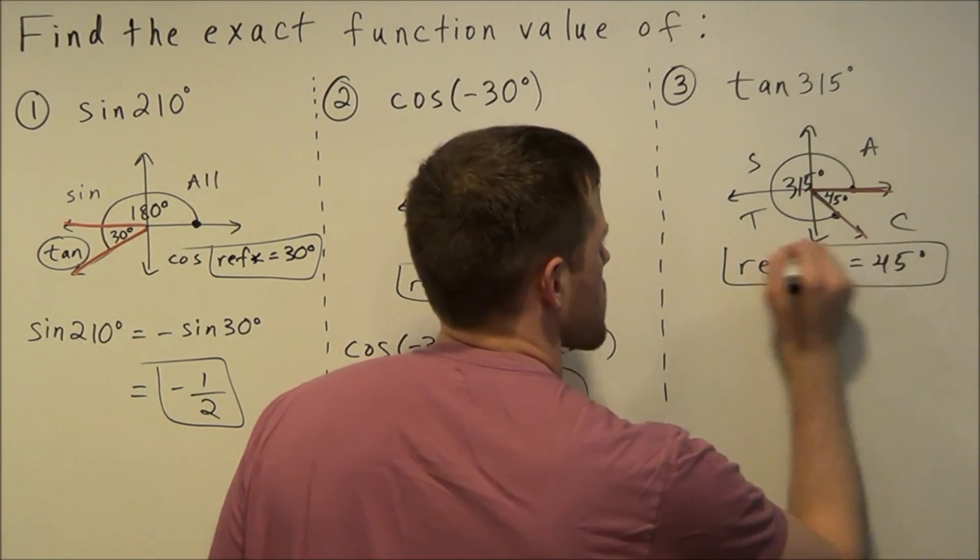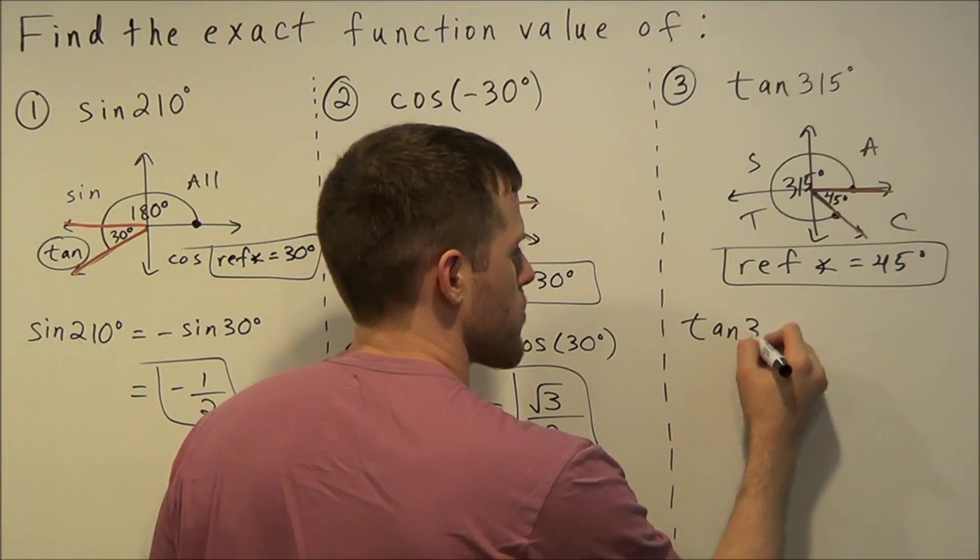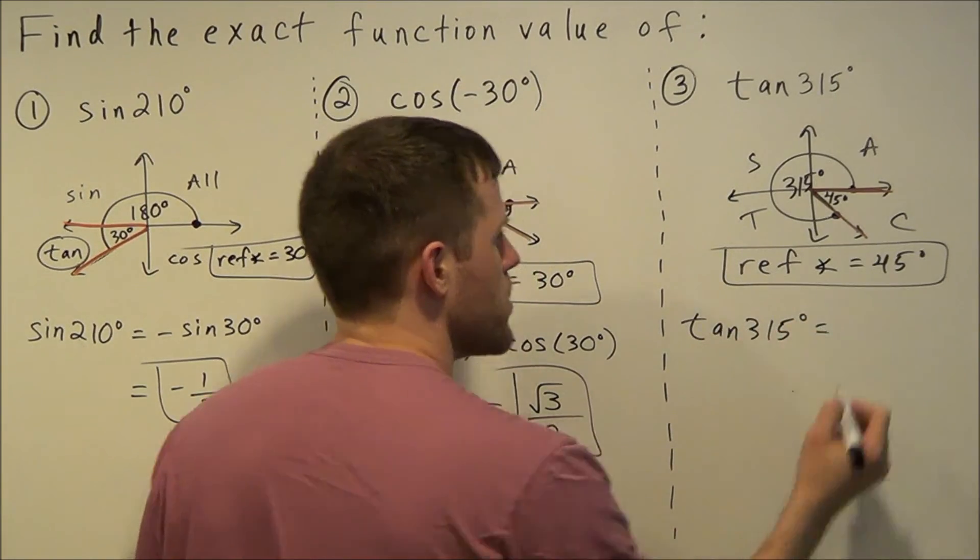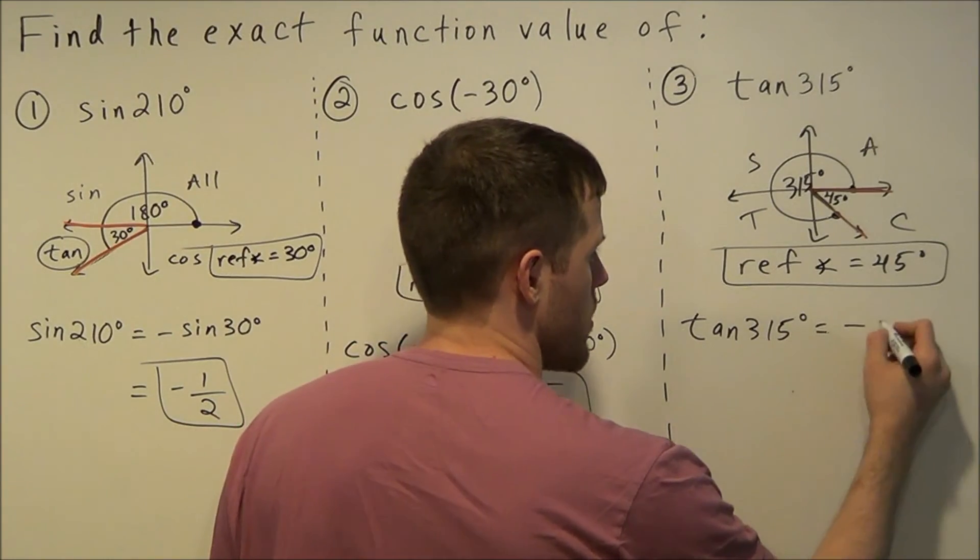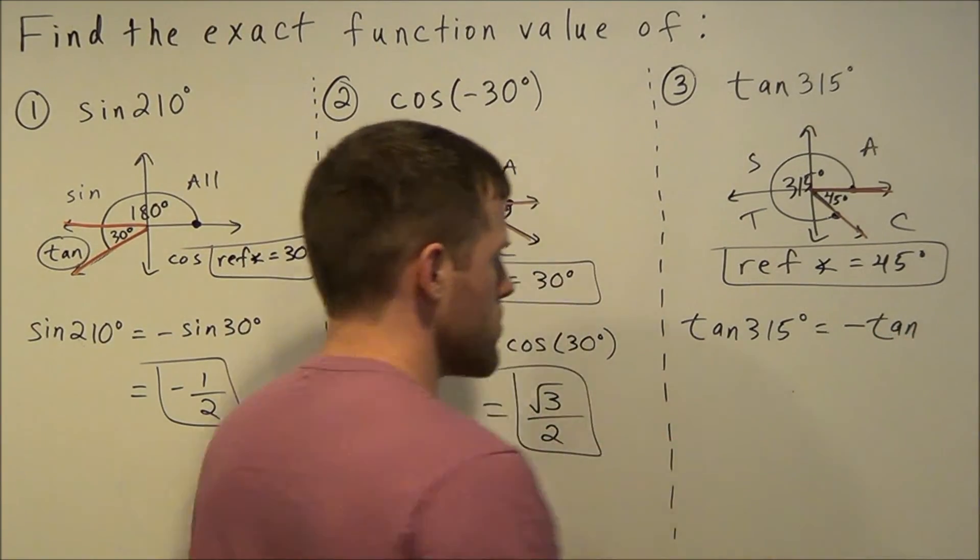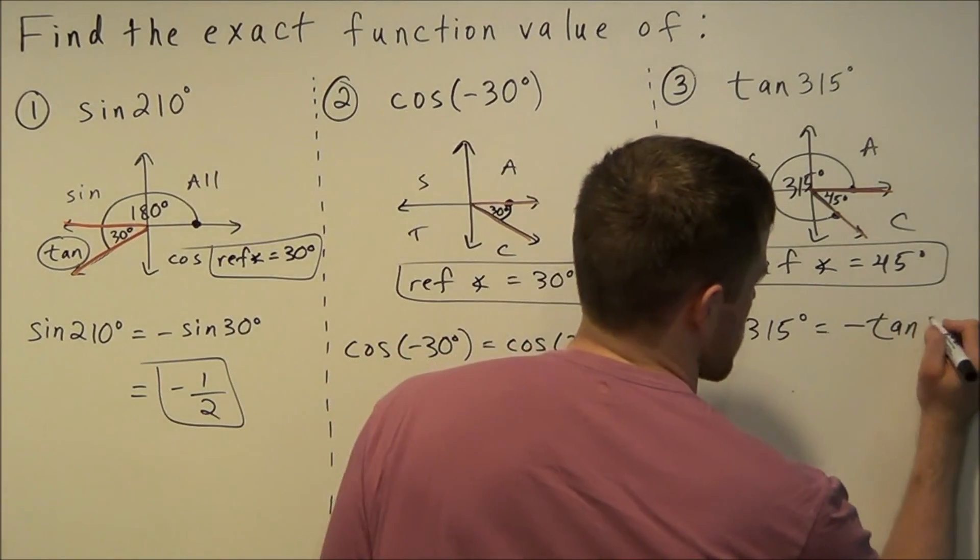Remember this is a crucial step: we write the original function tangent of 315 degrees. We know since we're in quadrant four our answer has to be negative, but now we replace our angle from standard position with our reference angle of 45 degrees.